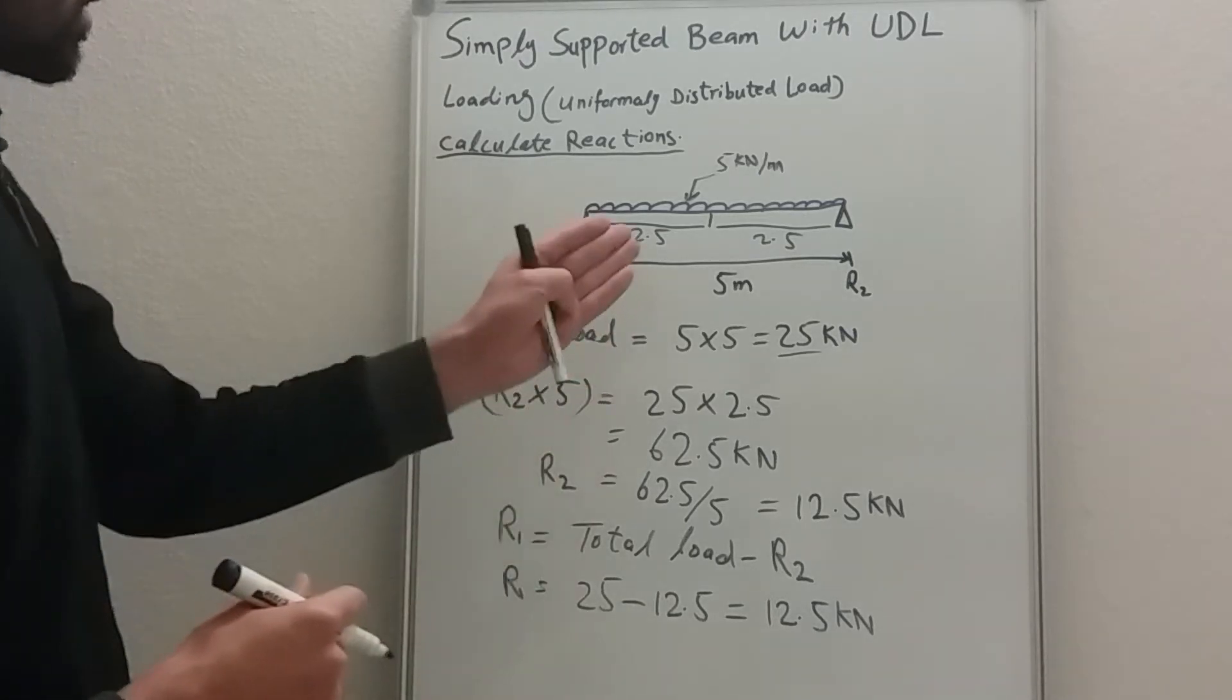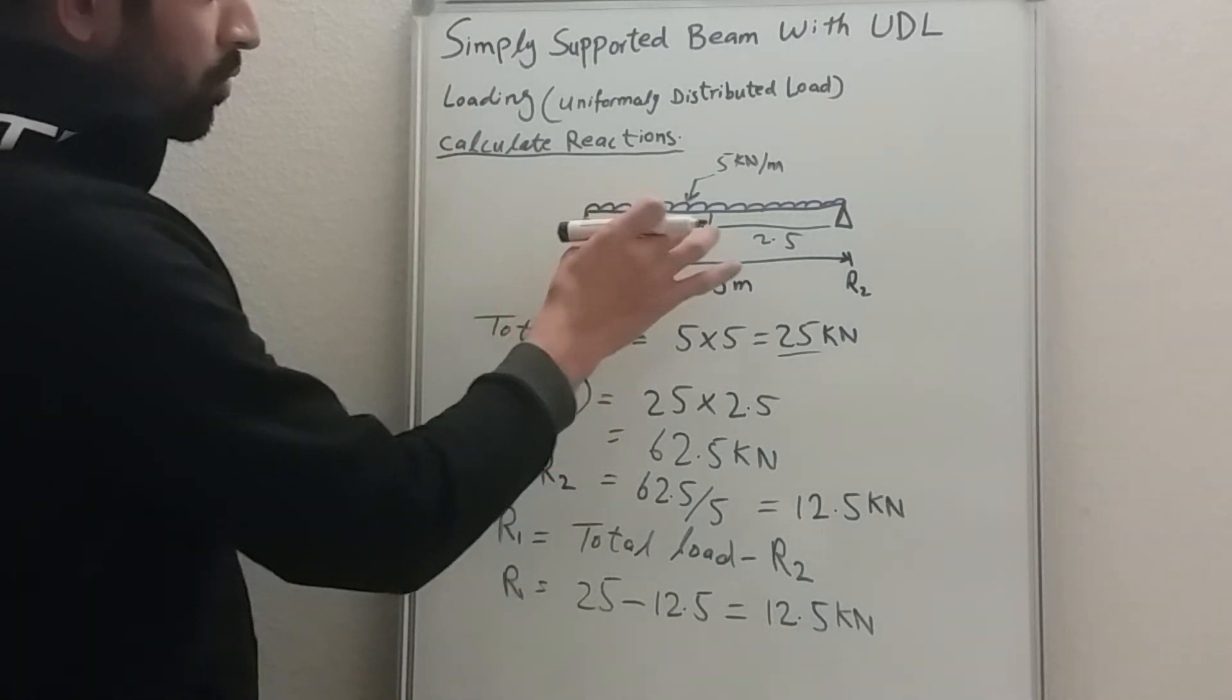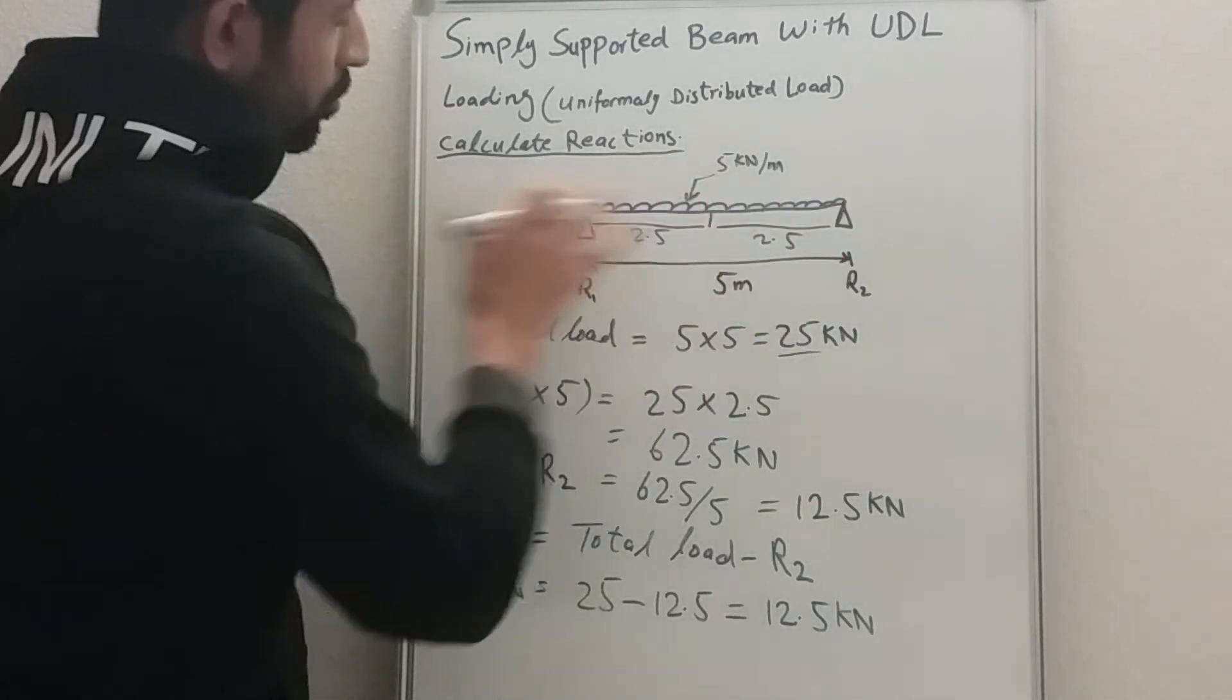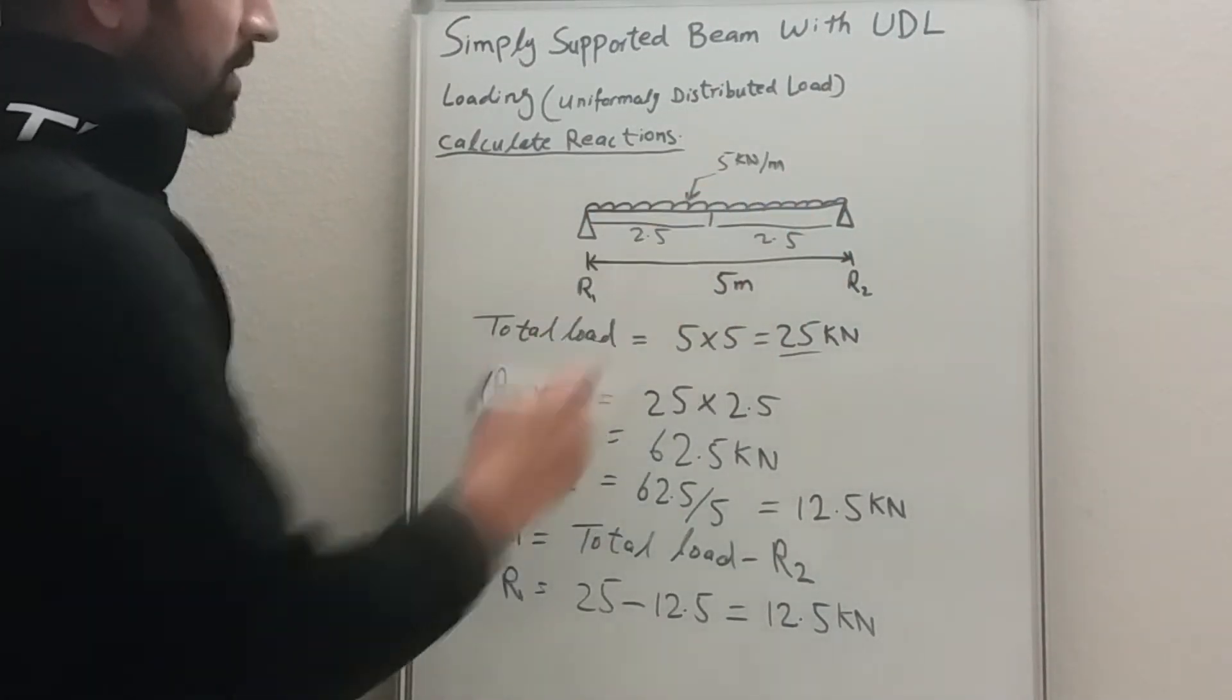Why is that? As you can see from the figure, the uniform distributed load is spread over the beam length, the whole length of the beam. So it's kind of a symmetrical beam.